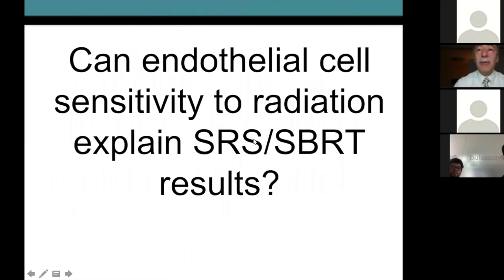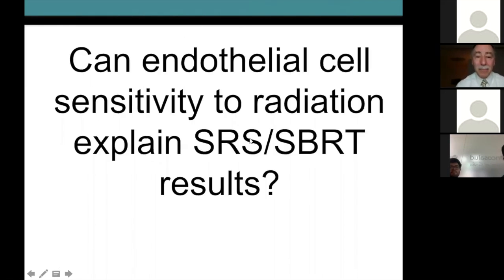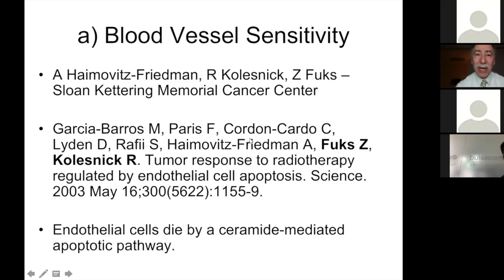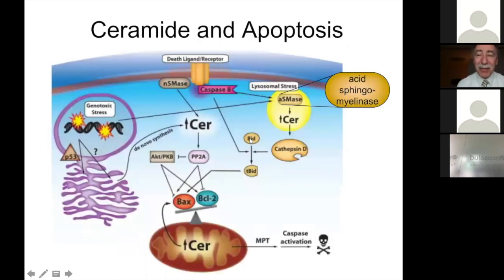The first proposed mechanism is tumor vessel sensitivity to radiation. The question is whether endothelial cells — the cells lining blood vessels — are more sensitive to high-dose radiation than to low-dose. Hamowitz, Friedman, Kolasnek, and Fuchs at Memorial Sloan Kettering Cancer Center would say yes: endothelial cells die by a ceramide-mediated apoptotic pathway, not the classic P53-mediated pathway.